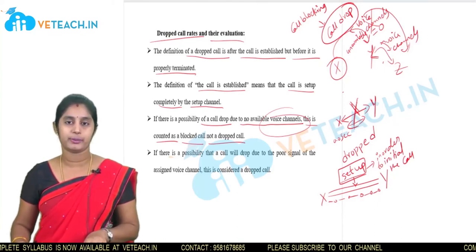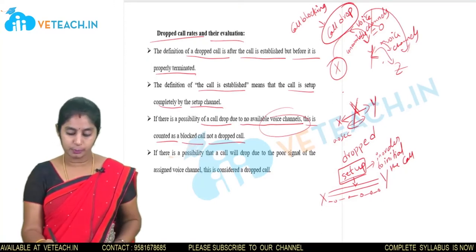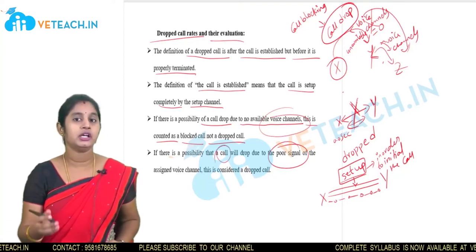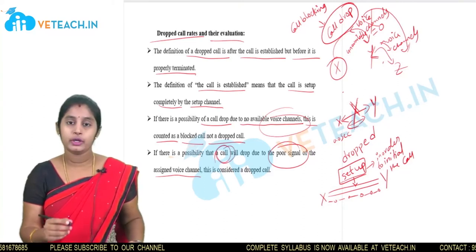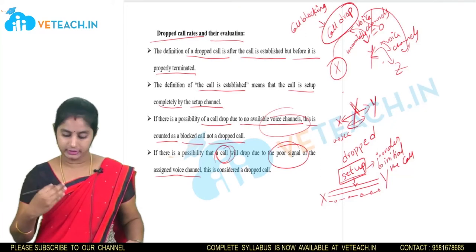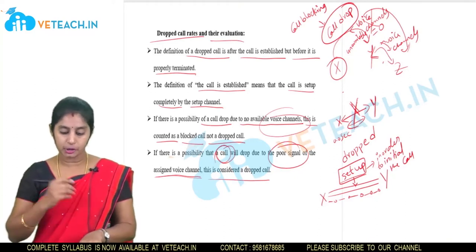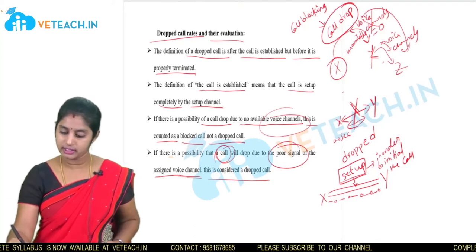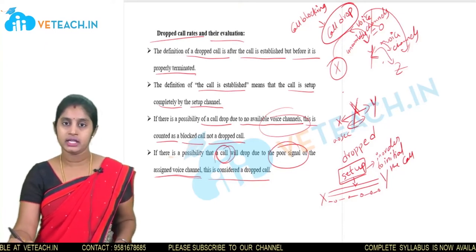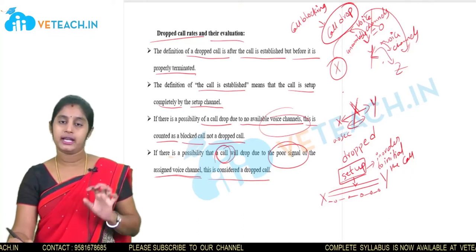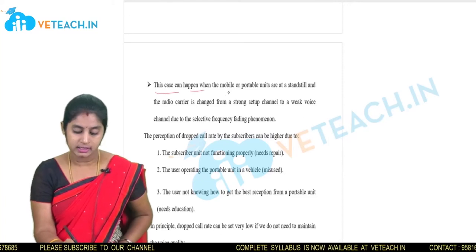Now we have a clear distinction between blocked call rates and dropped call rates. If there is a possibility that a call will drop due to poor signal — meaning the signal is very weak — and the assigned voice channel has a weak signal, then that is considered a dropped call.